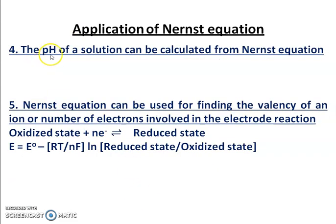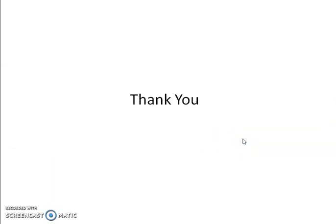The fourth application of the Nernst equation is that it helps us determine the pH of a solution. The fifth application is that it is also used for determining the valency, or the number of electrons involved in the electrode reaction. I hope you have understood the concept of the Nernst equation and its applications. Please be reminded that numericals will be coming from this topic. Thank you for watching.